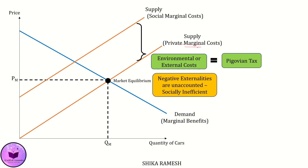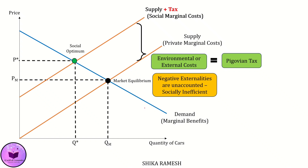On top of their usual private marginal cost, the firms now have this added tax, which pushes up the private marginal cost curve. The new curve with this tax — the social marginal cost — paints a better picture of the real cost. As a result, fewer cars are produced: we go from Qm to Q*, and they become pricier, with the price jumping from Pm to P*. Now the car market has become socially efficient.